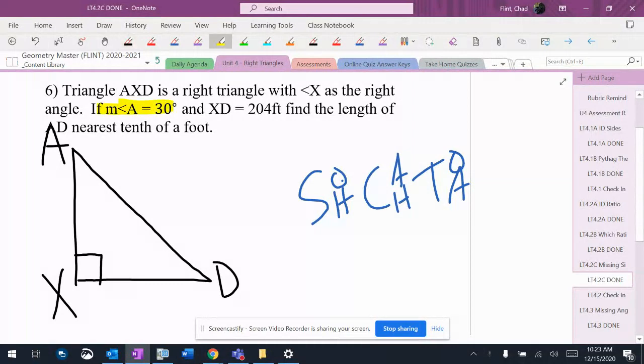It says angle A is 30 degrees. That's this angle up here for the picture that I drew. It says XD is 204, so that's going to go right there. And it says find the length of AD to the nearest tenth of a foot.